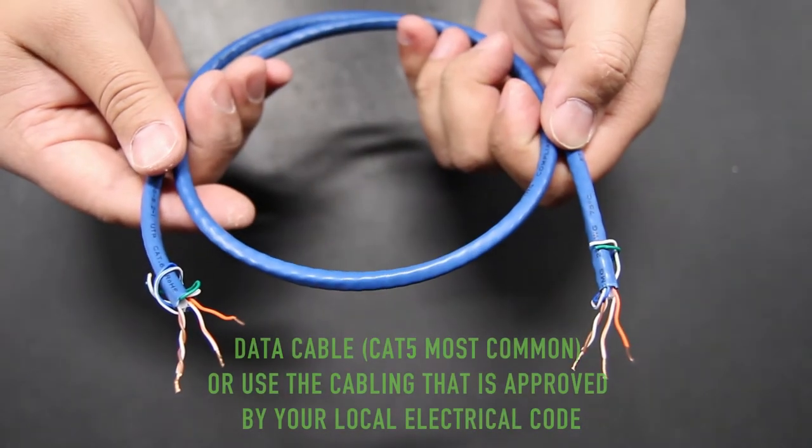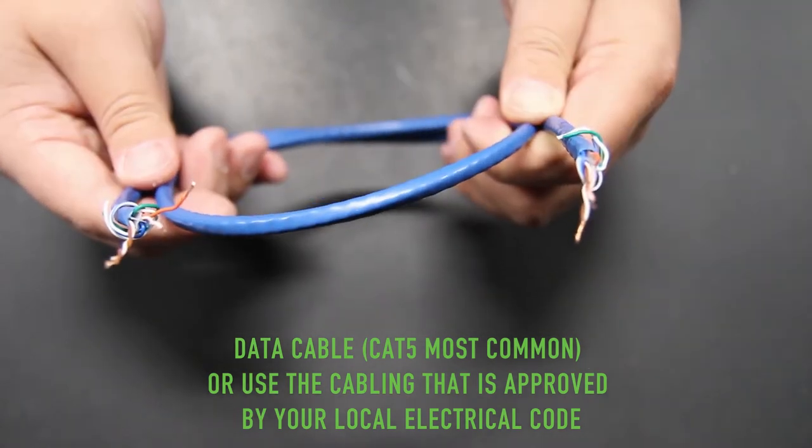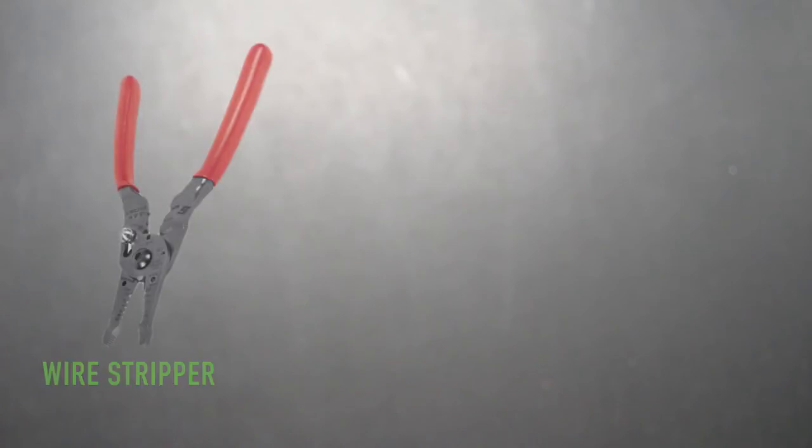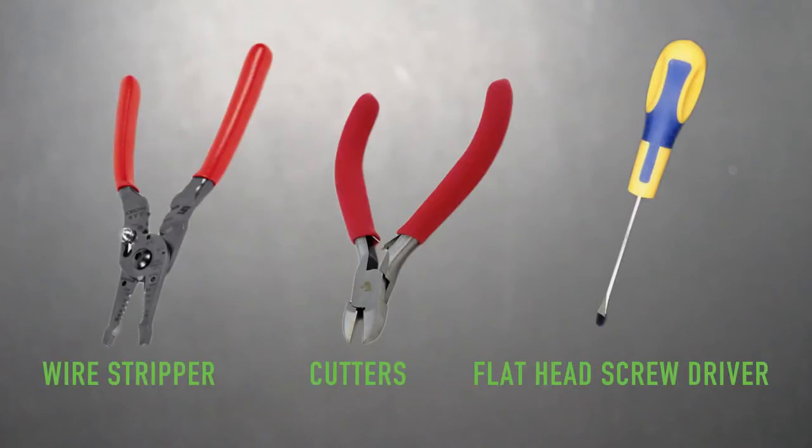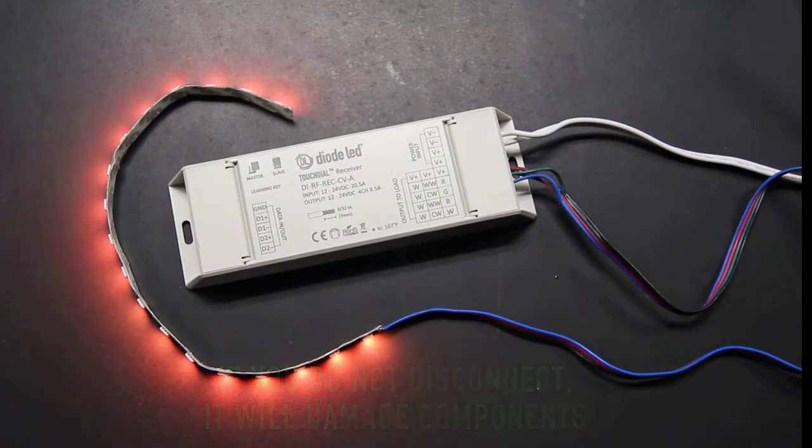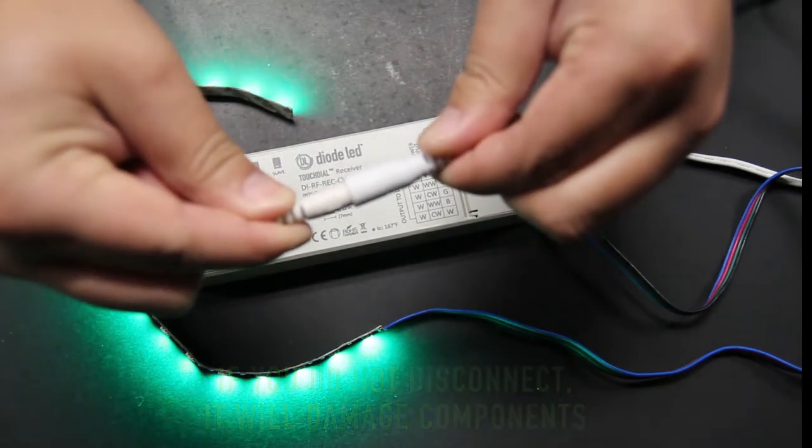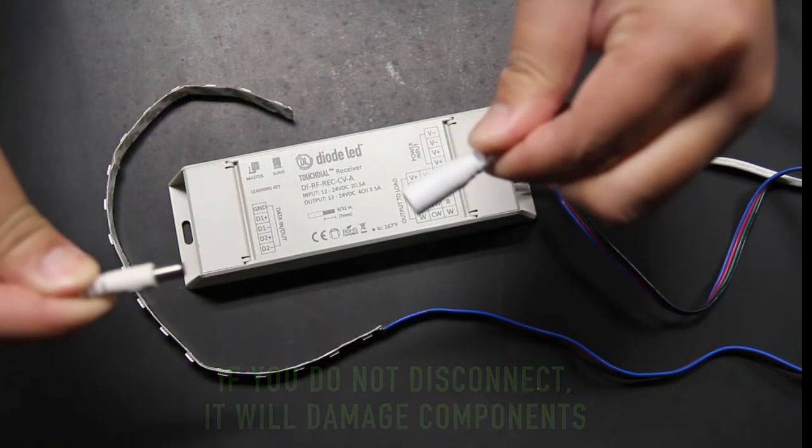To do this, you'll need a spool of data cable. CAT5 is the most common. However, use data cabling that has been approved for your local electrical code. You'll also need wire strippers and cutters and a flathead screwdriver. To start, disconnect power to your assembly if you have a pre-existing system. It's important to do this step to prevent any kind of electrical damage to the receivers.